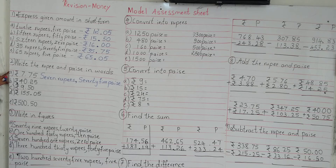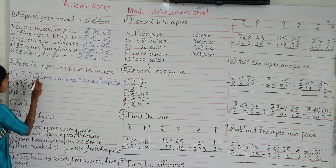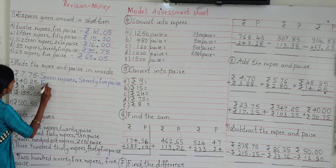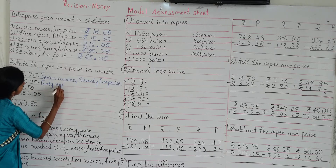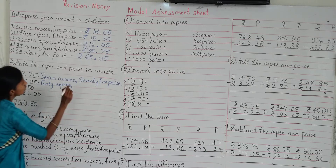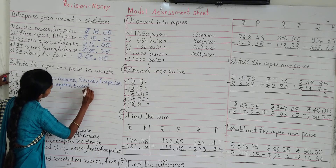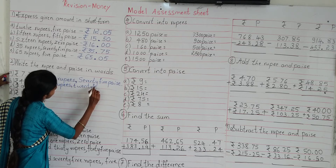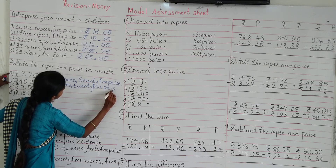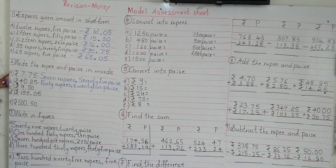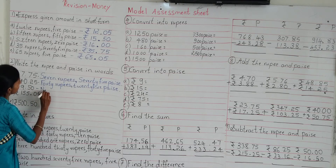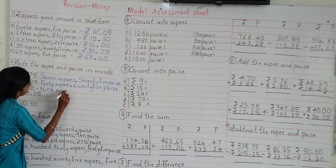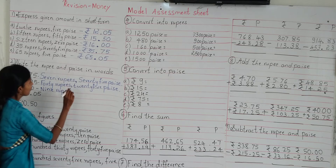Now look at the second example: rupees 40, 25 paisa. So you can write in words: 40 rupees, 25 paisa. Now look at the third example: rupees 9, 50 paisa. Express in words: 9 rupees, 55 paisa.